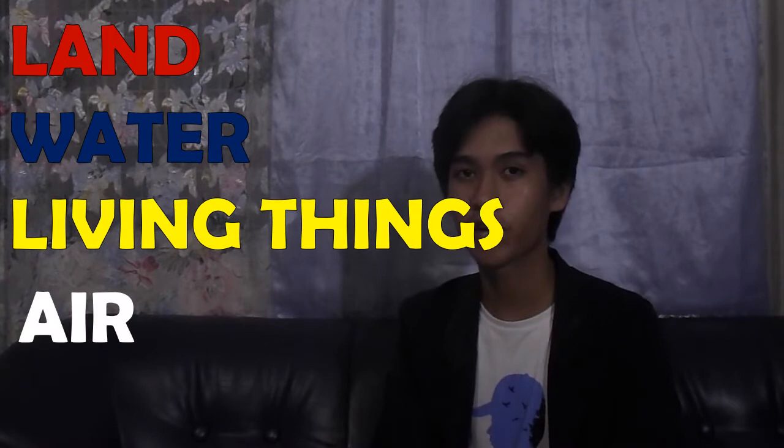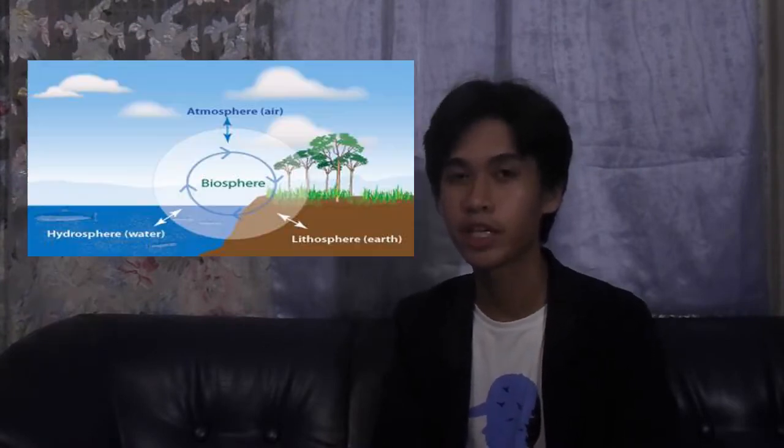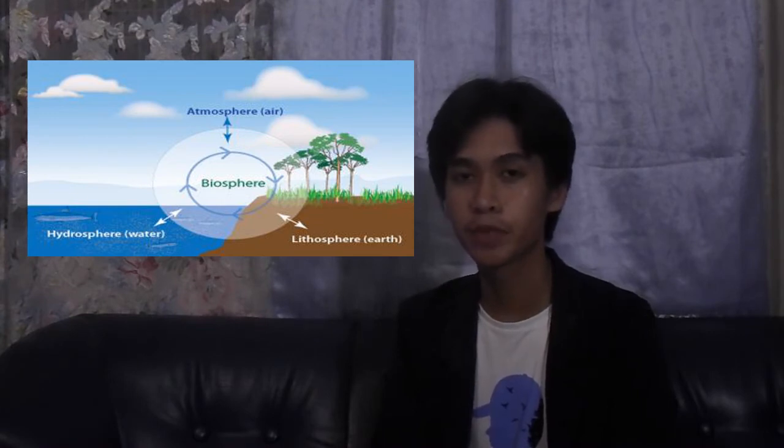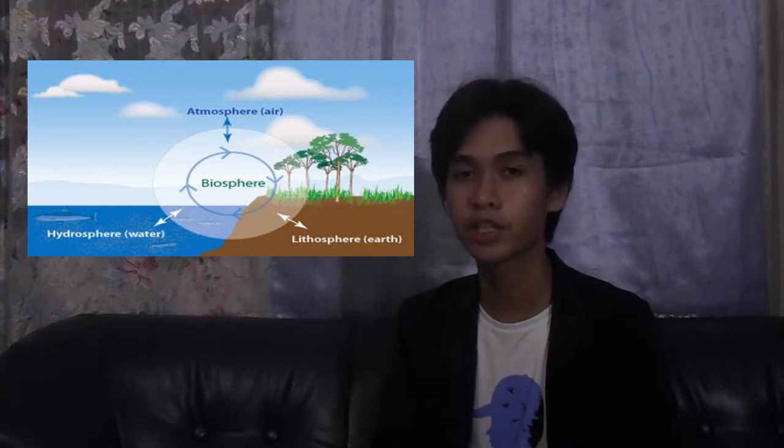Everything in the Earth system can be placed into one of four major subsystems: land, water, living things, or air. These four subsystems are called spheres — specifically, the lithosphere (land), hydrosphere (water), biosphere (living things), and atmosphere (air). Each of these four spheres can be further divided into sub-spheres.